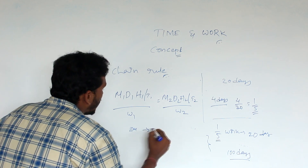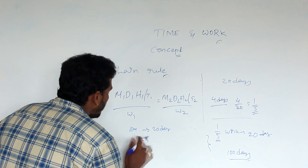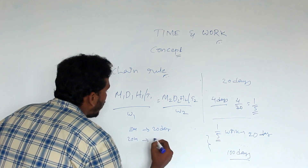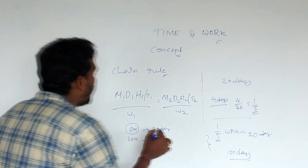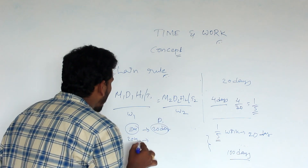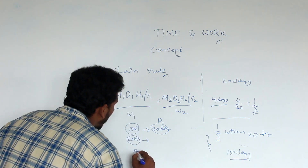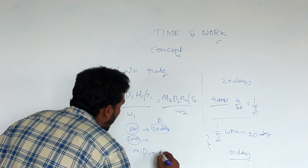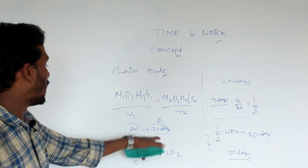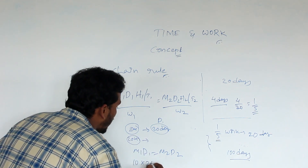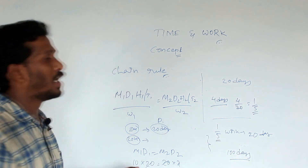For example: 10 men can do work in 20 days. How many days can 20 men do the same work? Using the formula M1 × D1 = M2 × D2: M1 = 10, D1 = 20, M2 = 20, D2 = x. So 10 × 20 = 20 × x, which gives x = 10 days.